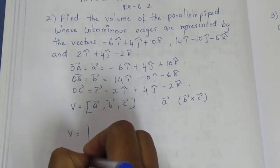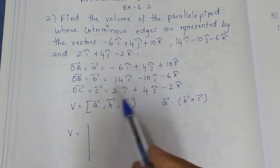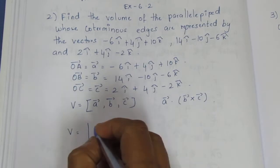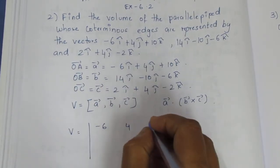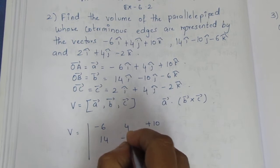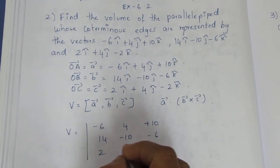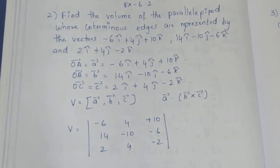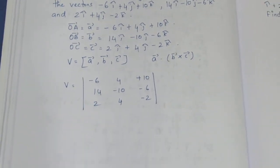Volume: we have to solve the determinant. Minus 6, 4, plus 10; 14, minus 10, minus 6; 2, 4, minus 2. This is the determinant value. We have to do any row or column expansion.